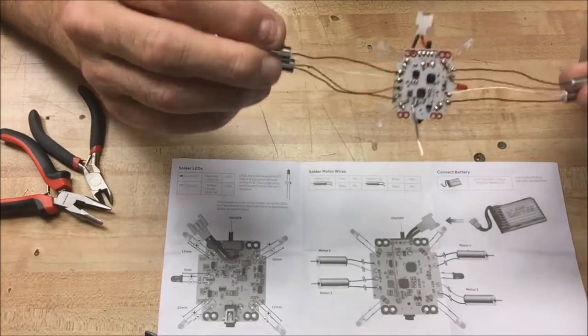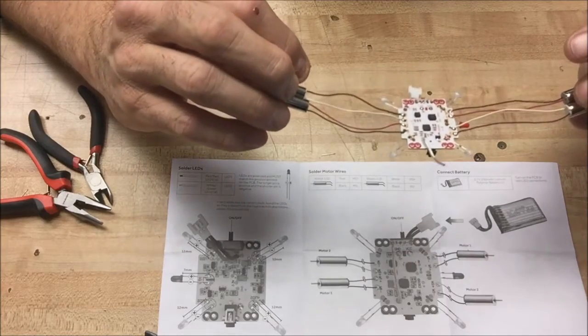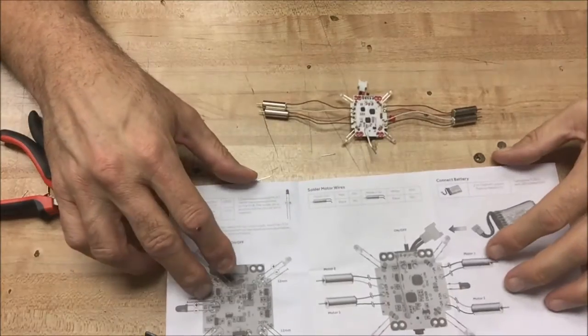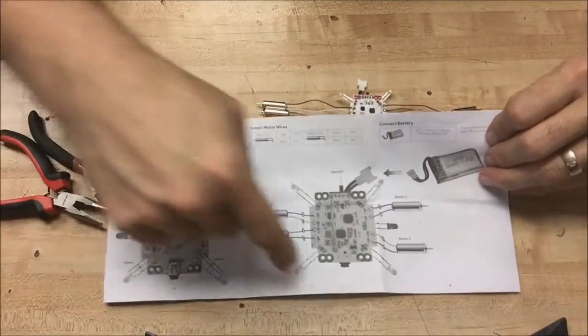And there you go. So I've got the motors attached, all four of them. We've got the LEDs attached, all five of them. So we've done this part. It's going to tell me to go ahead and connect the battery.